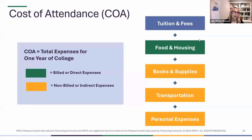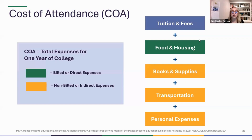So how are colleges making these decisions? The first thing a college needs to do when they're thinking about awarding financial aid to a student is come up with what is the cost of attendance — what is it going to cost a student to attend this college for a year?